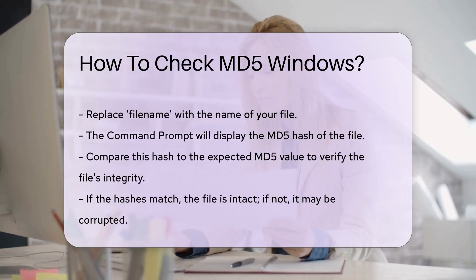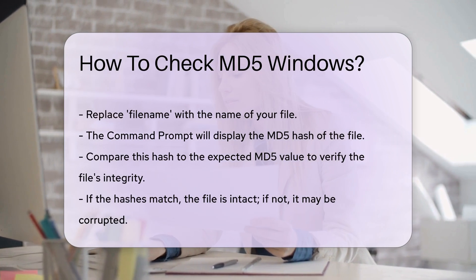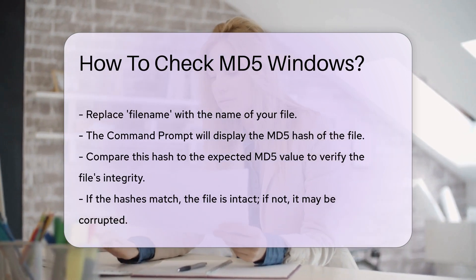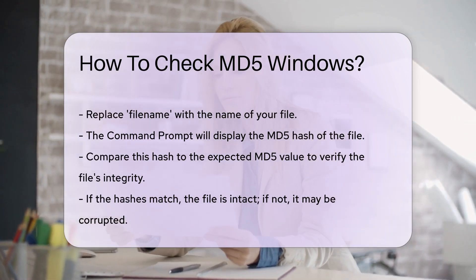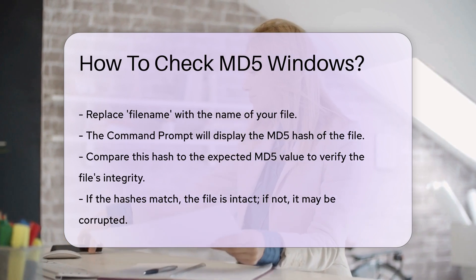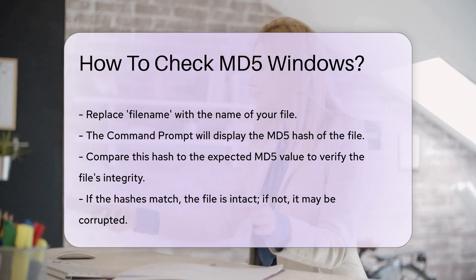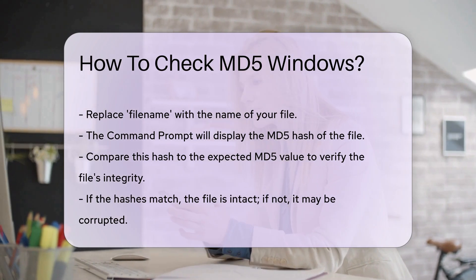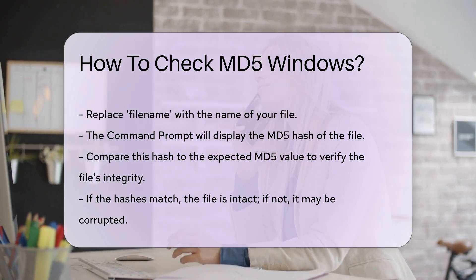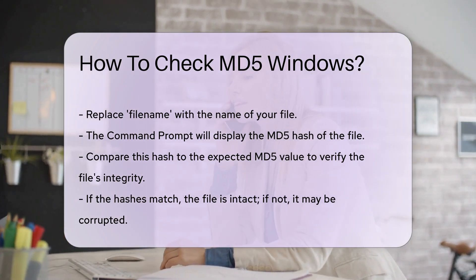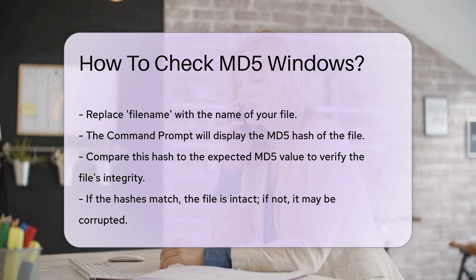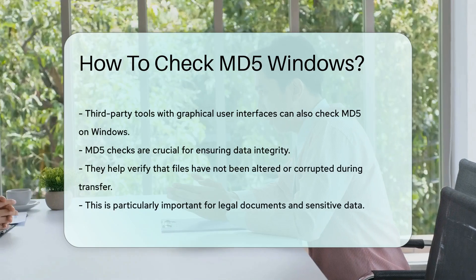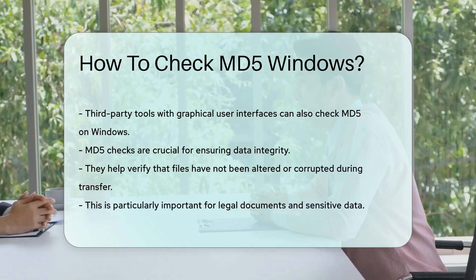The command prompt will display the MD5 hash of the file. Compare this hash to the expected MD5 value to verify the file's integrity. If the hashes match, the file is intact; if they do not, the file may be corrupted. Another way to check MD5 on Windows is by using third-party tools, which often provide a graphical user interface and can make the process easier for users unfamiliar with the command prompt.